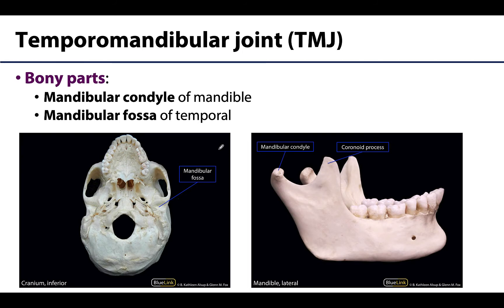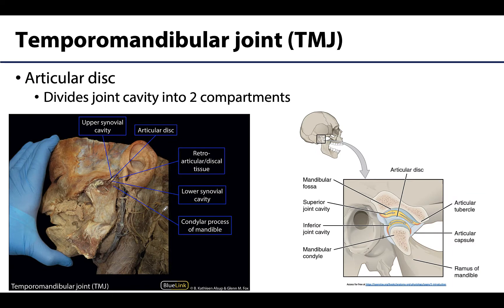So those are the sutures — sutures are a fibrous type of joint. Now let's get to the main movable joint of the head: the temporomandibular joint, or TMJ. The TMJ is a synovial joint formed by the mandibular fossa — the smooth area on the temporal bone — articulating with the mandibular condyle of the mandible. It is the mandible that is the movable bone; we do not have movement of the temporal bone. Within the articular capsule, the TMJ has a fairly prominent articular disc.